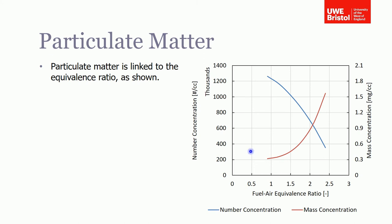If we start going leaner and leaner, which is what we want from a CO2 point of view - the leaner we can run our engines, the less CO2 we're using if we can deliver the same power. This is what car manufacturers are trying to achieve. So we go lean and we have a double benefit: not only do we reduce the amount of CO2 we're using, but also we reduce the mass of particulates. Great, we think, we've got a double win. But the problem here is that the number concentration is increasing.